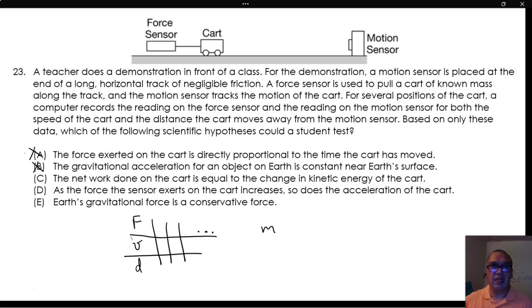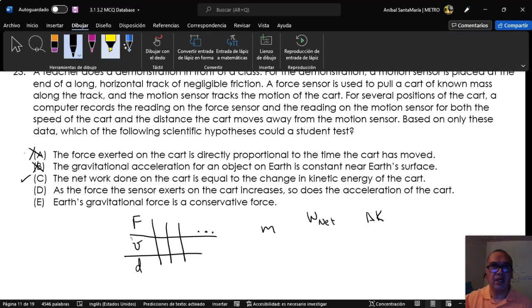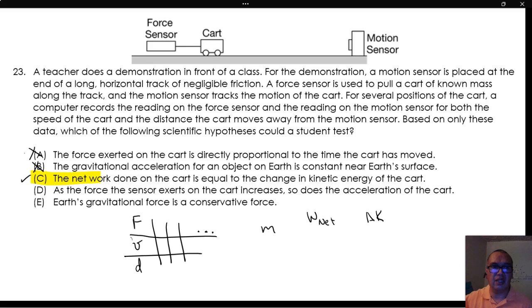Option C: The net work done on the cart is equal to the change in kinetic energy of the cart. Since we have collected data on force and position, it is possible to have a force-position graph. The area under this graph can be estimated to find the work done on the cart. On the other hand, having values for the mass, initial and final velocities will allow us to calculate the change in kinetic energy. This is therefore a valid hypothesis to be tested. It is important to notice that we are not checking whether this statement is actually true or not. We are only establishing if the hypothesis can be tested using the given data.